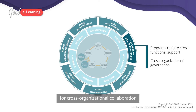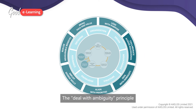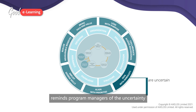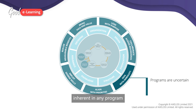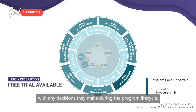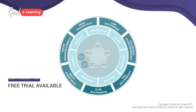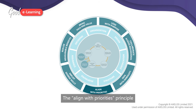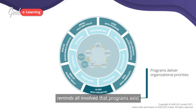The Deal with Ambiguity principle reminds program managers of the uncertainty inherent in any program and to identify and understand risks associated with any decisions they make during the program lifecycle.